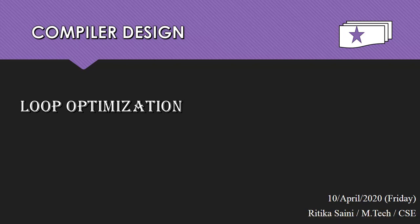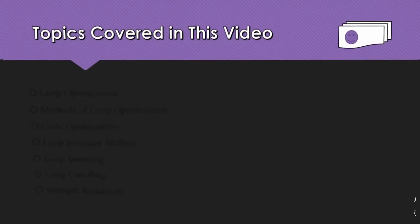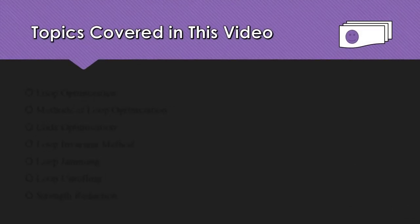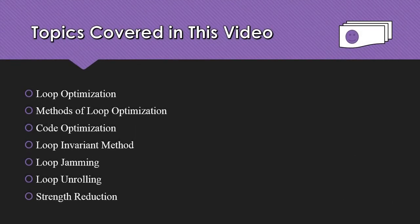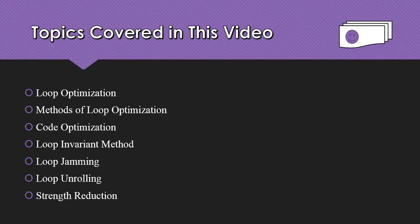Hello, in this video we will discuss loop optimization. The topics we will cover are: what is loop optimization, and the different methods of loop optimization — code motion, loop invariant, loop jamming, loop unrolling, and strength reduction.